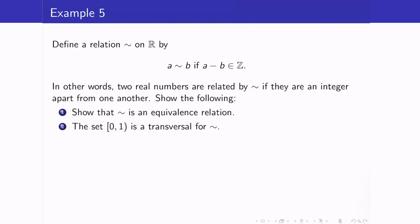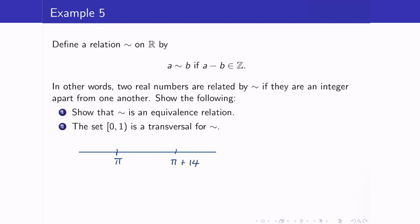Suppose we have a relation defined by: a is related to b if a minus b is in Z. Meaning they are related if they are an integer distance apart. So π and π + 14 are related because their difference is 14. Similarly, 3.5 is related to 5.5 because their difference is 2, and 0.5 is also related to 5.5. It is an exercise for you to show that this is an equivalence relation.